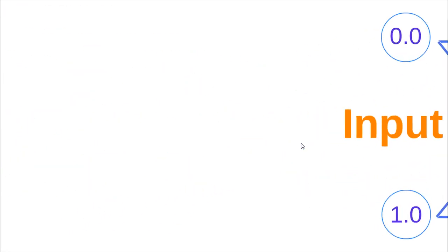Let's try to go from the input to the output. This process is called propagating the neural network. Suppose we have these two values: zero and one.